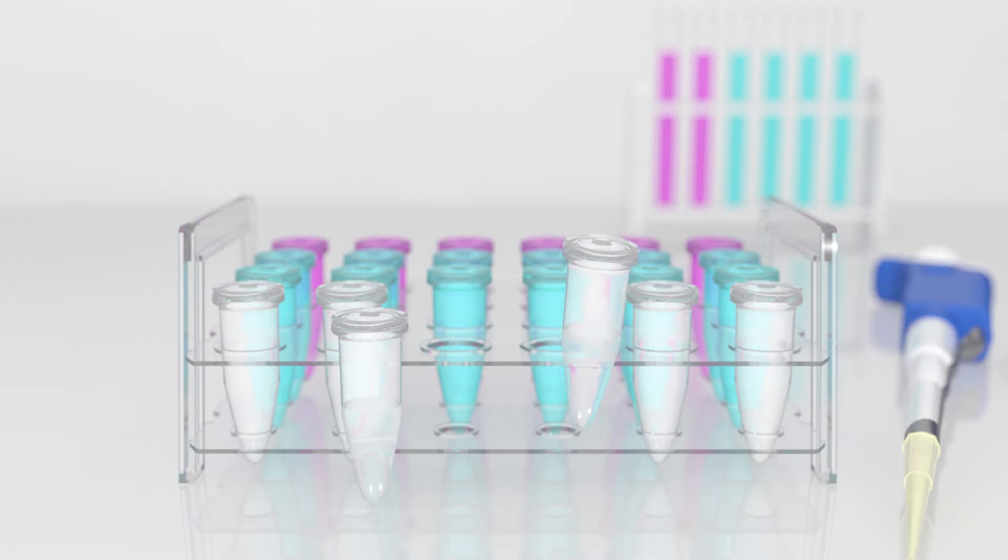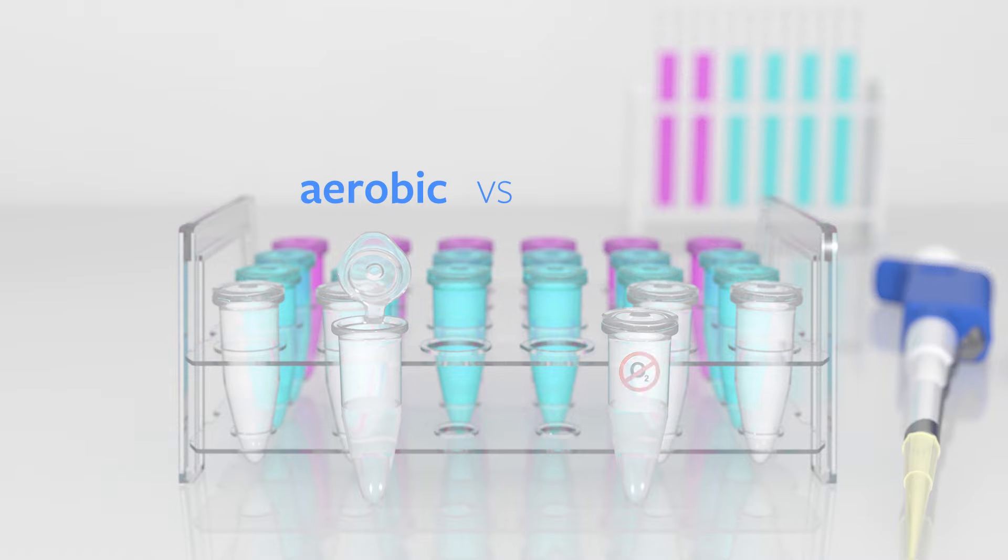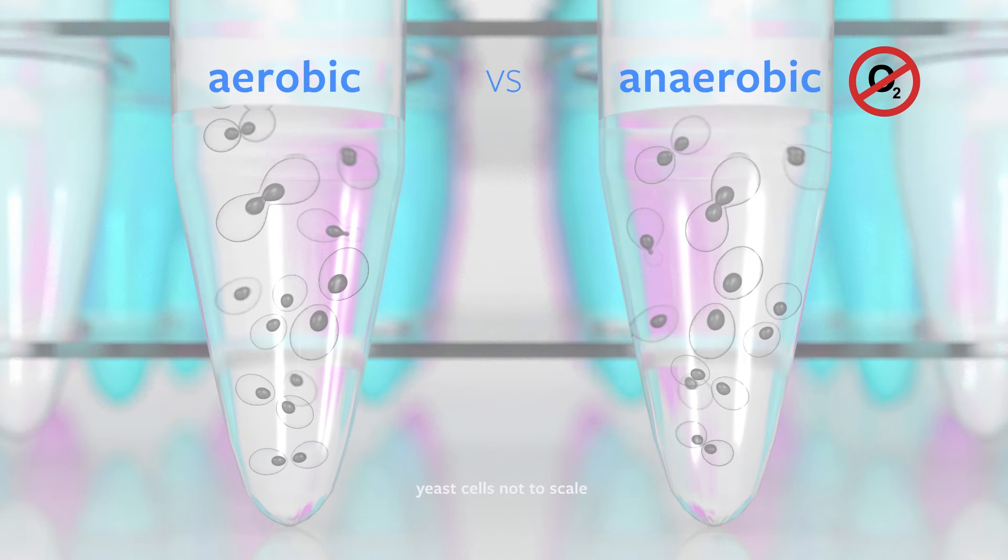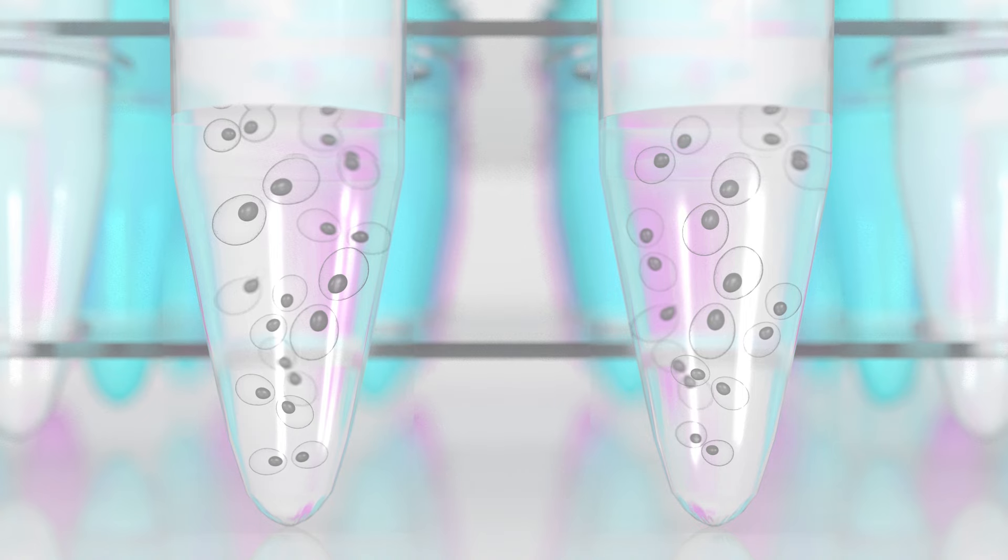As an example, we'll compare what happens to yeast genes when cells are grown in aerobic versus anaerobic conditions. The cells grow and adjust which genes need to be activated or repressed in order to survive.